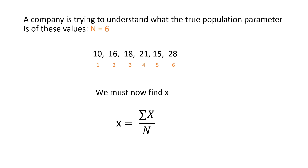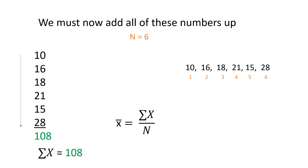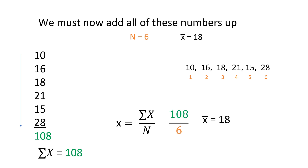We must now find x-bar. To find x-bar, we must add up all of our values and come up with 108. We take the 108 and divide it by n, or 6 in this case. x-bar equals 18.